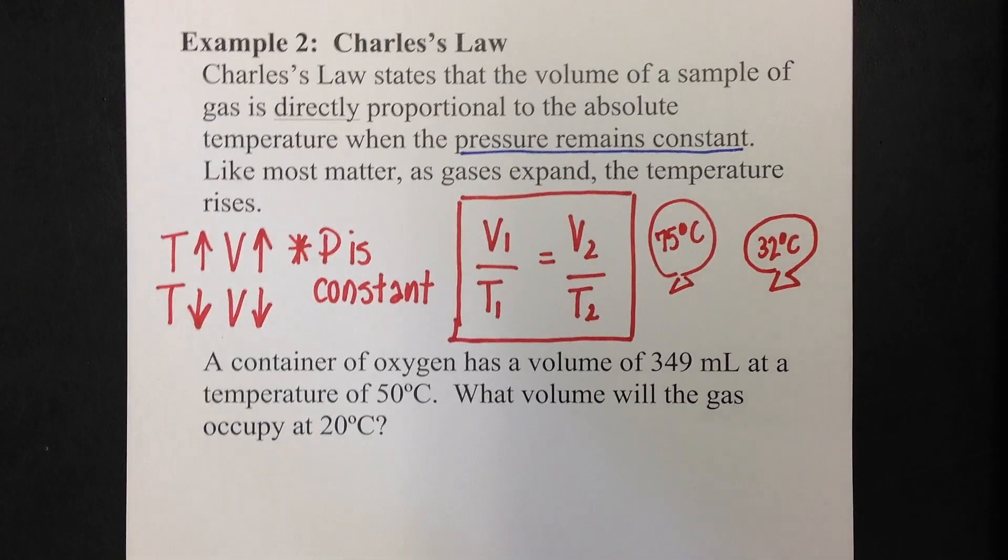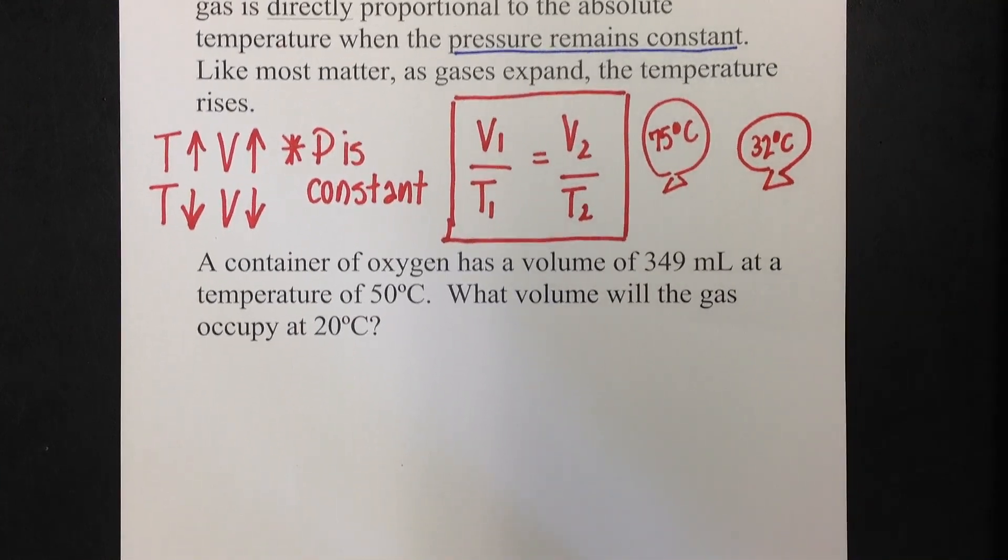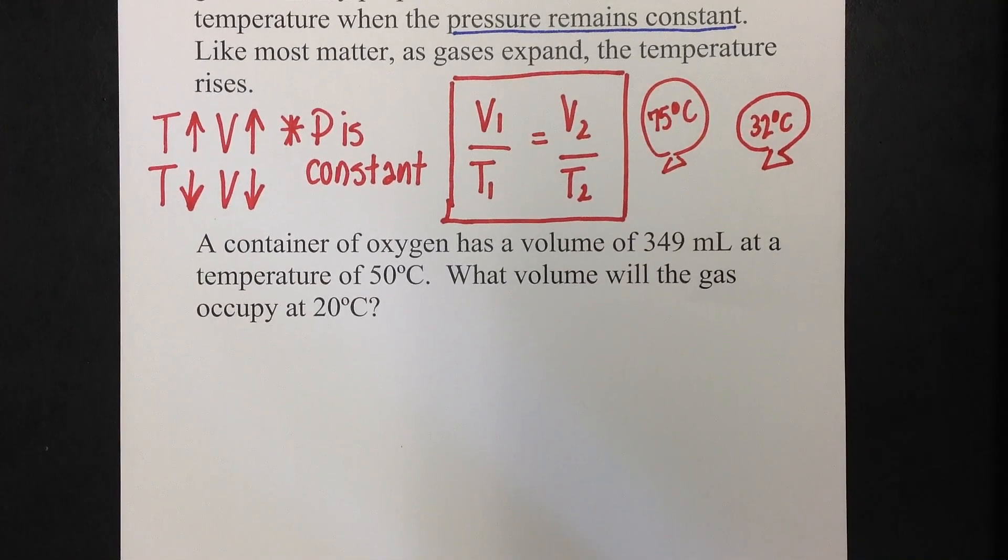Let's go ahead and look at our first example. And we're going to work through this in a very similar way that we did the Boyle's law example. And what I mean by that is we're going to label everything we've got, then we're going to set our equation up so our unknown is on the left, what we're plugging into is on the right, and everything just works out perfectly.